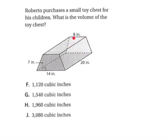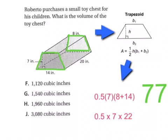Then what I need to do is go to my formula sheet and identify the trapezoid. When I do this, the formula for finding the area of a trapezoid is one-half times H times the quantity B1 plus B2.